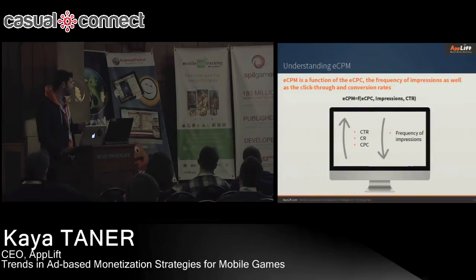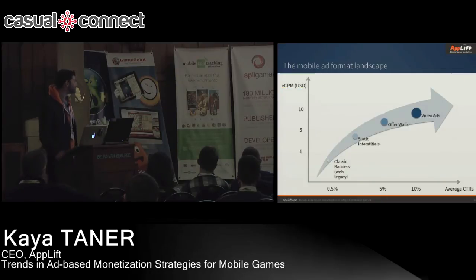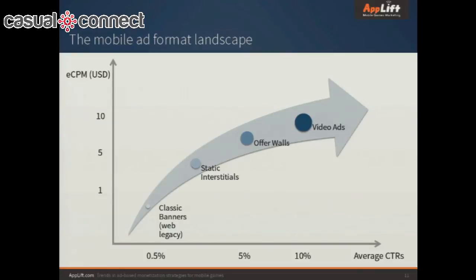Looking at the performance of different formats: classic banners have around 0.5% click-through rates and yield roughly $0.60 to $1.00 eCPM on mobile. Interstitial ads yield around $3 to $5 eCPM with up to 5% click-through rates. Offer walls are generally incentivized — you incentivize the user via virtual currency to download something — so eCPMs tend to be much higher because users have a clear incentive. Video ads also perform very well, with eCPMs around $10 and average click-through rates of up to 10%.